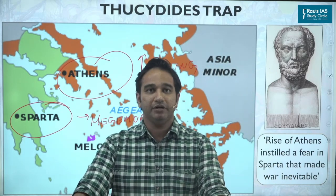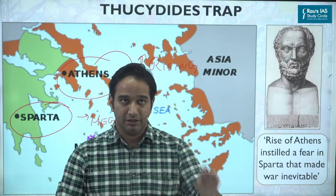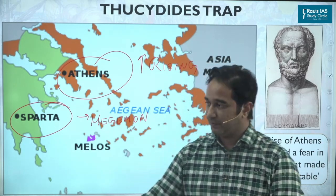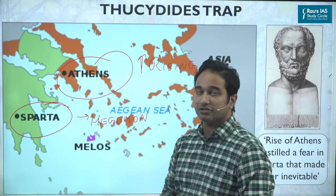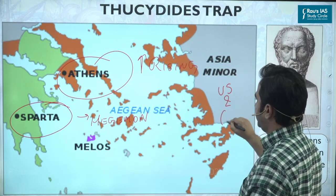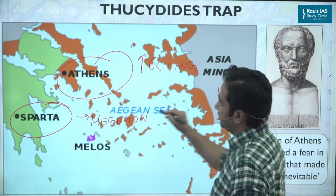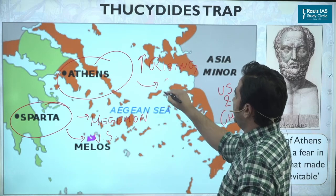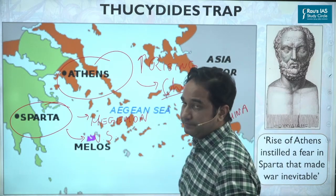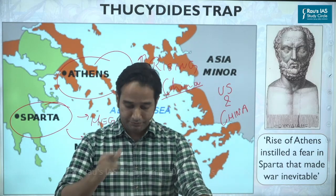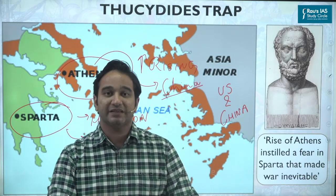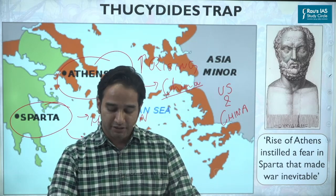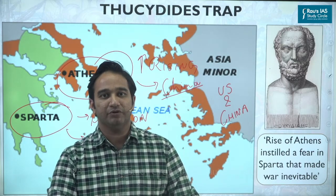The Peloponnesian War happened between these two Greek city-states — between Sparta, which was the hegemon or dominant power, and Athens, which was the rising power. Specifically, this has been used in the context of US and China, where the US, similar to Sparta, is the hegemon, and China, similar to Athens, is the rising power. During the Peloponnesian War, Athens, the rising power, lost and Sparta, the hegemon, won and became the dominant power in the Greek world.